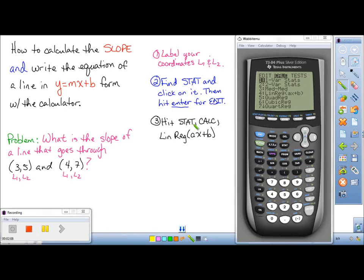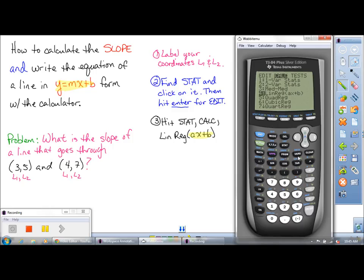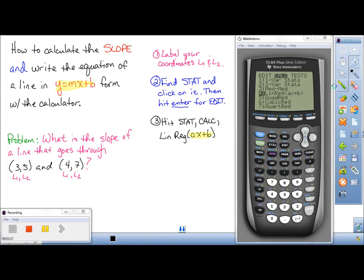And you'll notice under number 4, it doesn't have MX plus B, but it has AX plus B. And A and X are just simply variables that are going to represent the slope in this particular example.